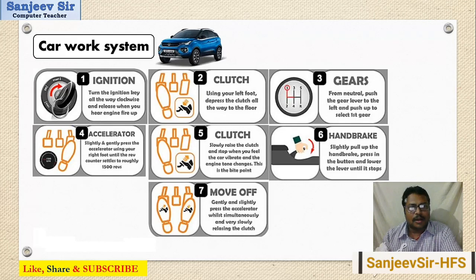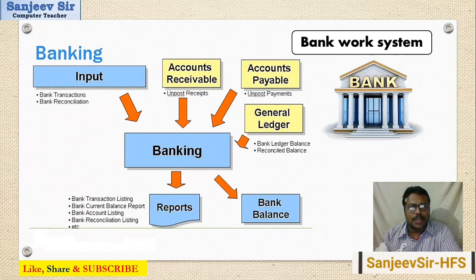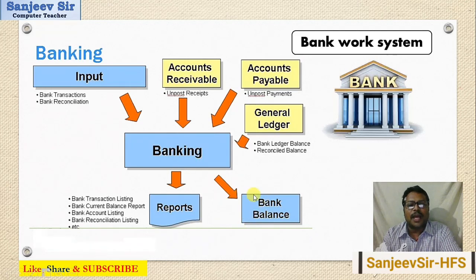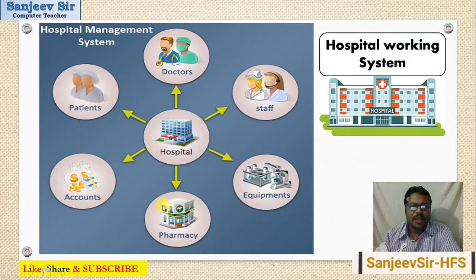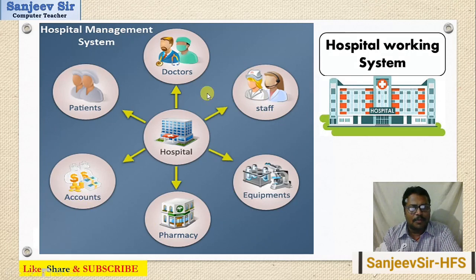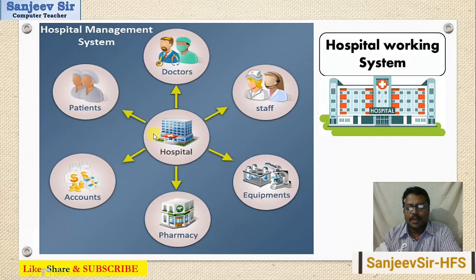The car works according to these rules and steps. Similarly, a bank works with individual components: when we do bank transactions, we check accounts, ledgers, records, bank balances, and generate reports. The banking system also works with the help of these individual components. In a hospital, we have doctors, patients, accounts, pharmacy, equipment, and staff — all with different tasks — but all together working for the hospital system.